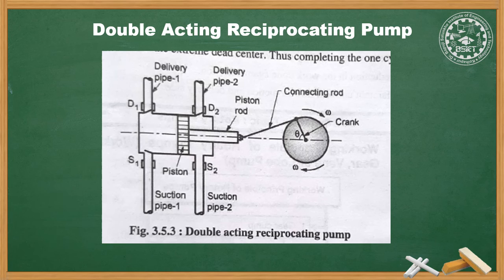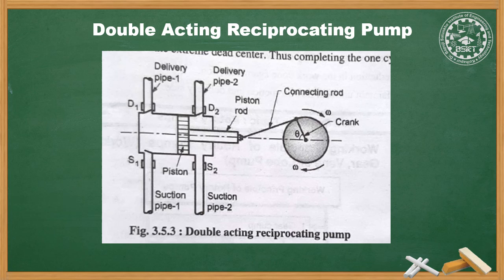This process continues until the crank reaches the outer dead center. As the crank rotates from outer to inner dead center, liquid is sucked through suction valve S2 and delivered through delivery valve D1, completing one full cycle. The discharge graph shows flow during both 0–180 and 180–360 degree rotations, thus eliminating the intermittent pumping disadvantage of the single acting pump.